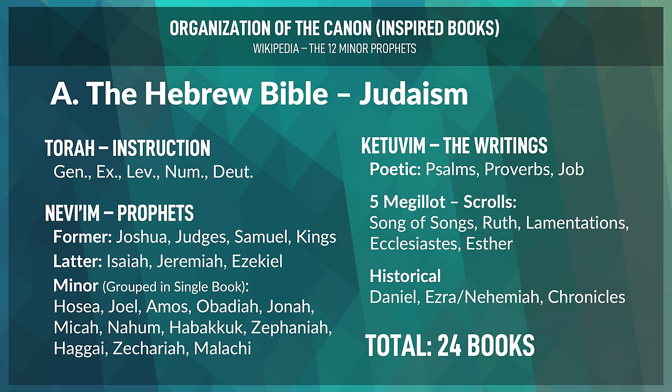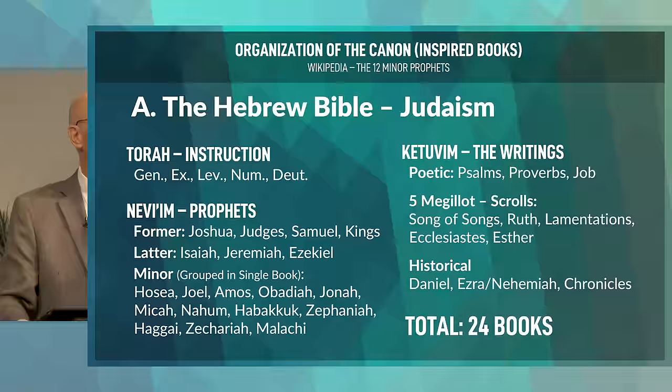The 12 minor prophets are: Hosea, Joel, Amos, Obadiah, Jonah, Micah, Nahum, Habakkuk, Zephaniah, Haggai, Zechariah, and Malachi. Then the Hebrew Bible has the Ketuvim or writings: the poetic writings — Psalms, Proverbs, Job; the five Megillot scrolls — Song of Songs, Ruth, Lamentations, Ecclesiastes, and Esther; and the historical books — Daniel, Ezra, Nehemiah, and Chronicles — for a total of 24 books.